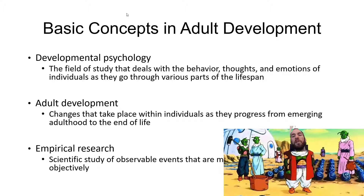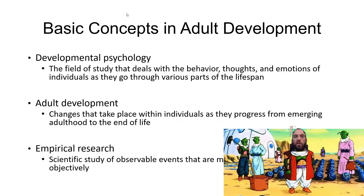A couple of key points here: development, and specifically adult development, is now understood to occur across the lifespan. Traditionally, it was argued that all development largely takes place within a very narrow part of the lifespan — early childhood, middle childhood, or as a neonatal infant. But now we understand that development occurs across the lifespan, and thus it's important to study adult development. We're also going to review a lot of empirical research studies throughout this course, not just in my slides, but also in our discussion posts.